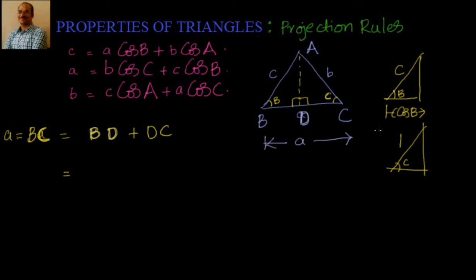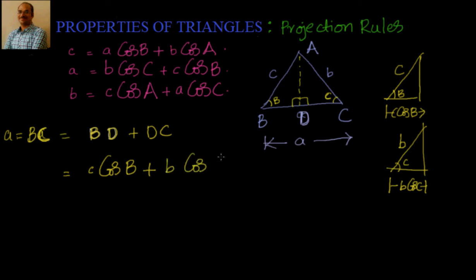You can see that this length DC is nothing but equal to b·cosC. So a equals BD plus DC, which is c·cosB plus b·cosC. Similarly, you can take the base as B instead of A.